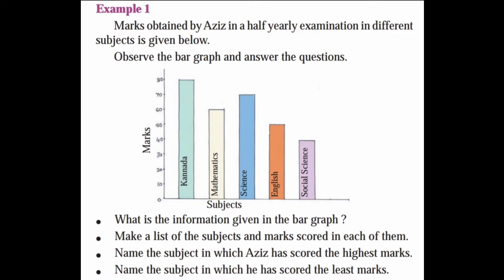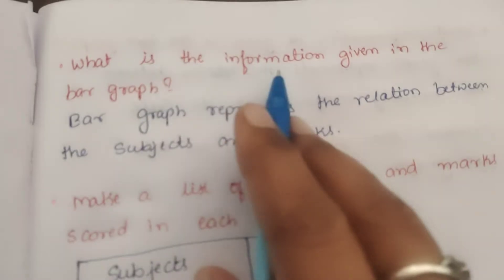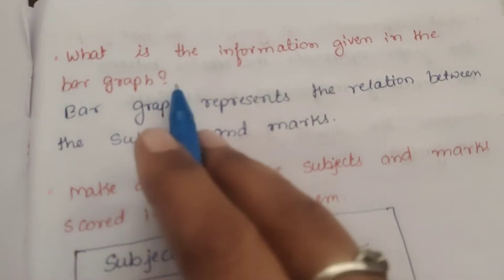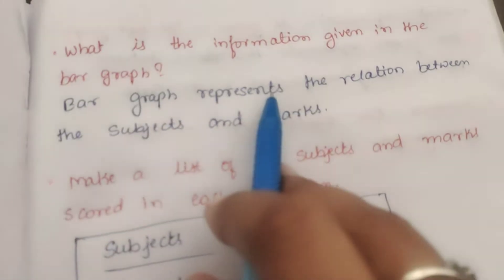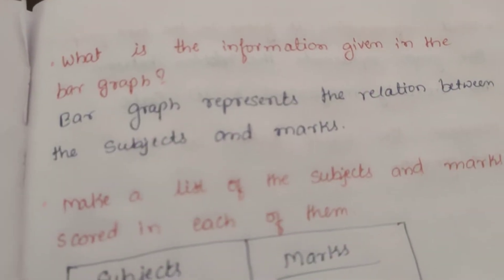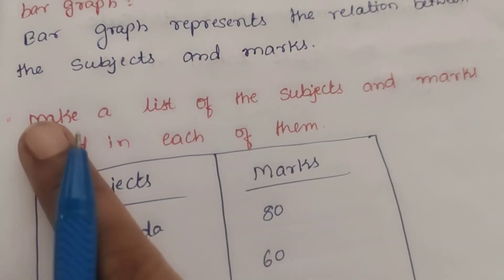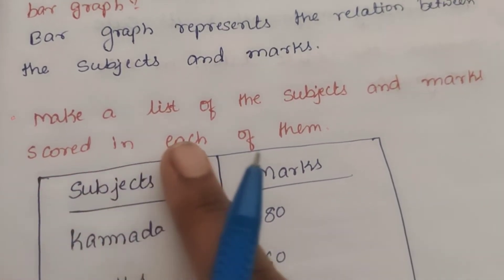What is the information given in the bar graph? Subject-wise marks are shown. For Example 1, the bar graph represents the relation between subjects and marks. Make a list of the subjects and marks scored in each of them.